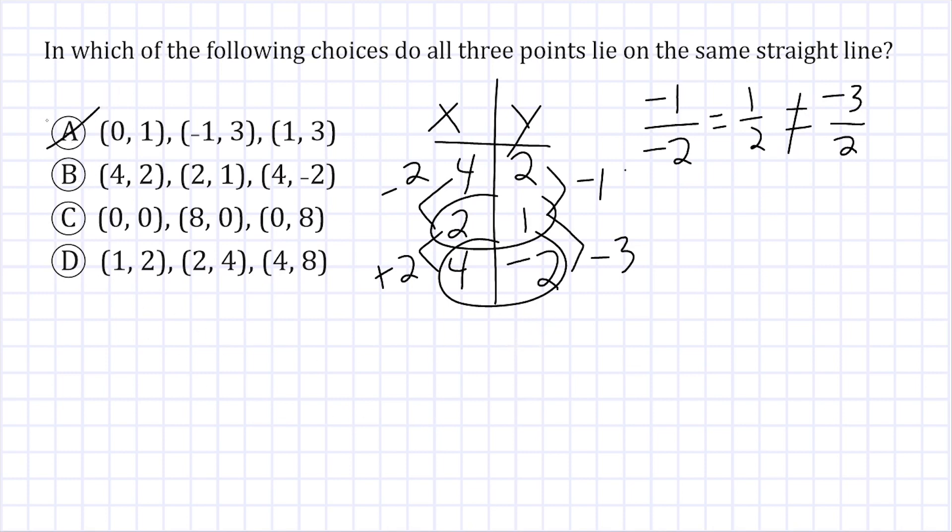So we have eliminated A, we've eliminated B. Let's go ahead and figure out if C would have points that form a straight line.